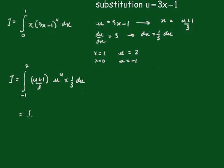Now that will be the integral from minus 1 to 2, taking the 1 ninth out the front, of u plus 1 times u to the 4th du.